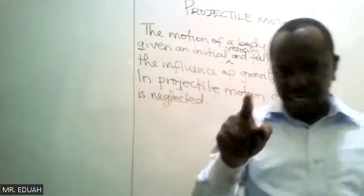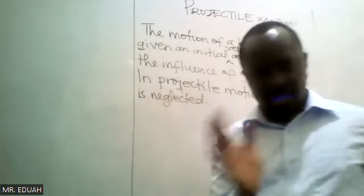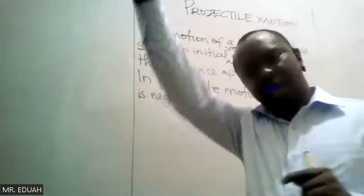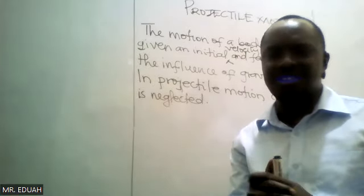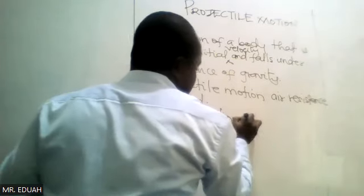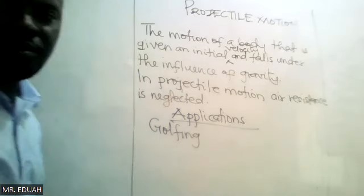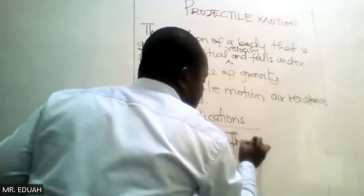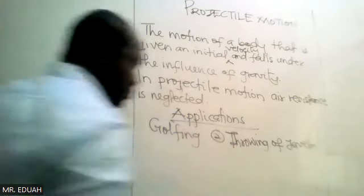Let's look at applications. During golfing, projectile motion is applied. A hole will be somewhere, the golfer positions the ball and then hits it. By hitting it, he is giving the ball a certain initial velocity. We talk about golfing. We also talk about throwing of javelin.